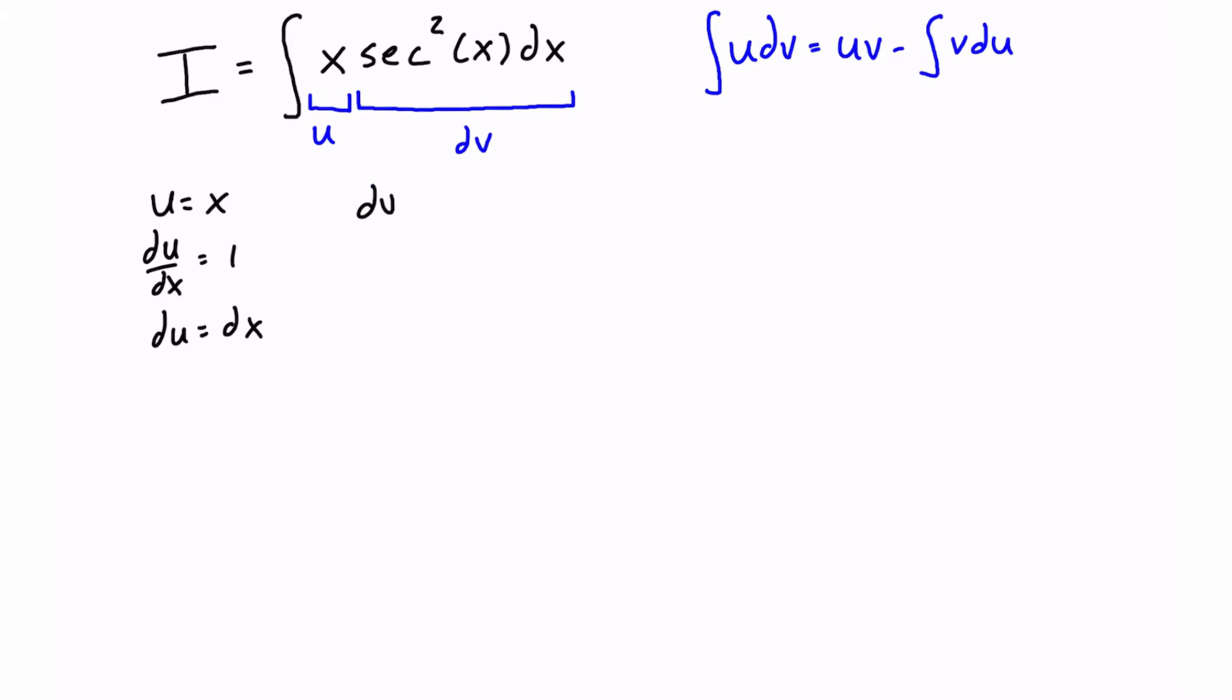Now for dv, we can write this separately as well, this is secant squared of x dx. What we're going to do is we're going to take the integral of dv, so we have the integral of dv is just equal to the integral of secant squared x dx.